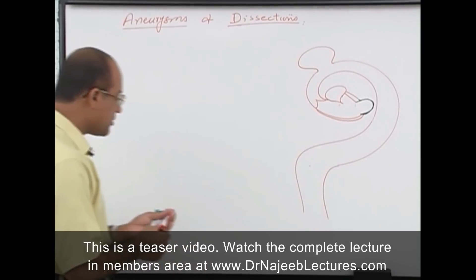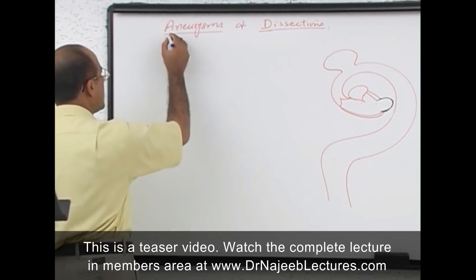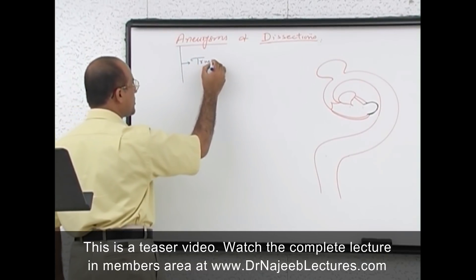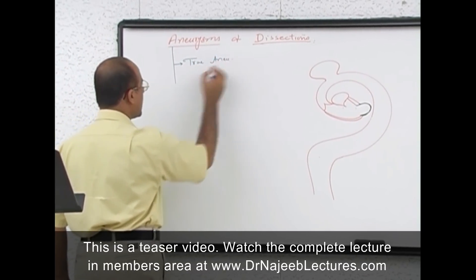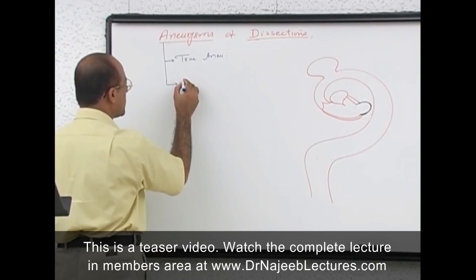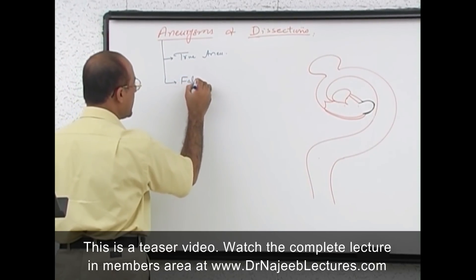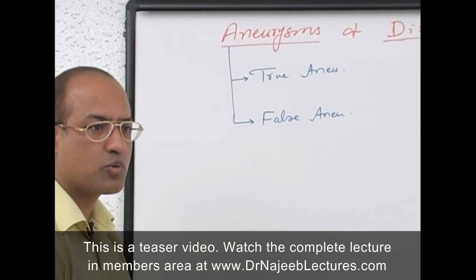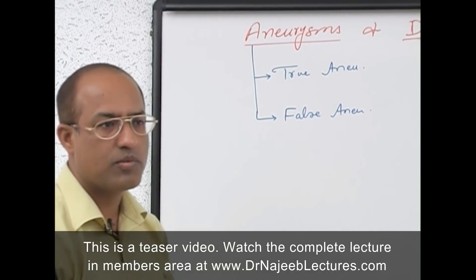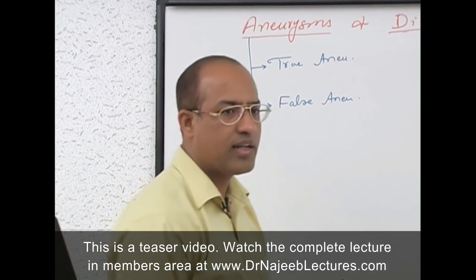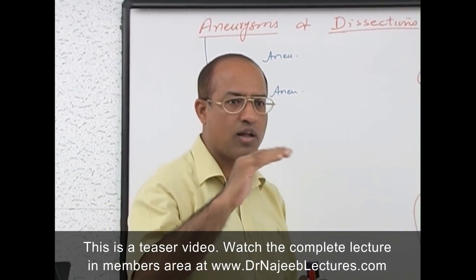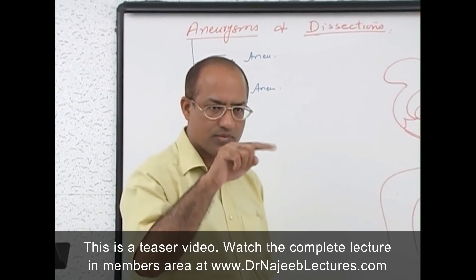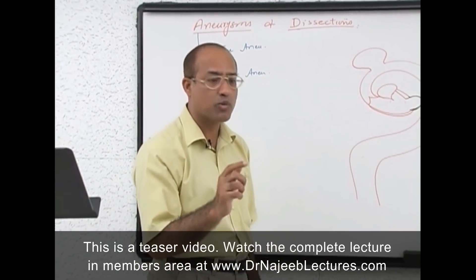Once we have defined aneurysm, we should have a very clear concept that some aneurysms are called true aneurysms and there are also false or pseudo aneurysms. The difference is that in a true aneurysm, all the walls of the aneurysm are made by the layers of the cardiovascular system.